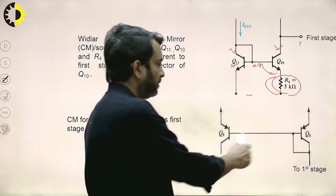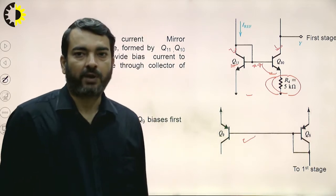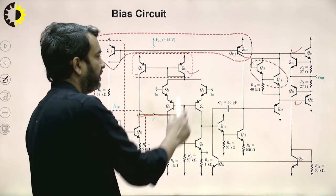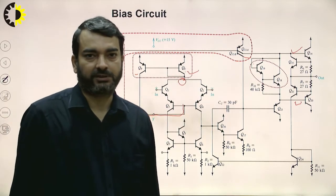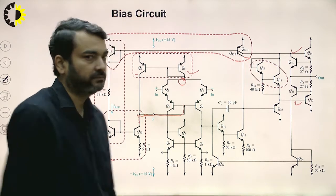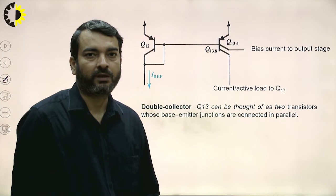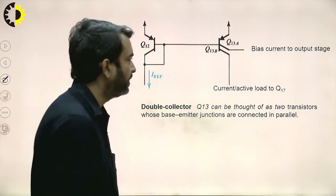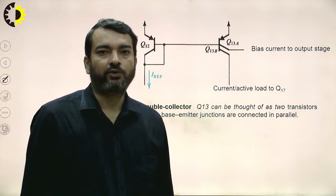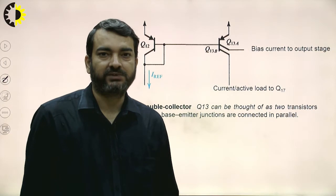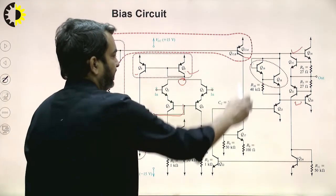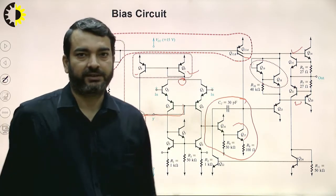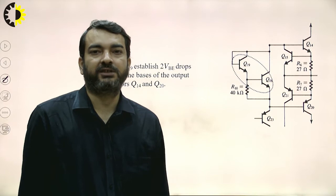The Q8 and Q9 current mirror is a simple current mirror that provides biasing to the input stage. Transistors Q12 and Q13 form another simple current mirror. Q13A is biasing the gain stage transistor Q17, while Q13B is biasing the gain stage, as seen in the diagram. This complete stage is the gain stage.